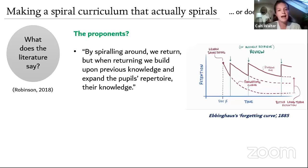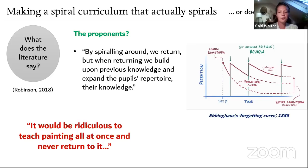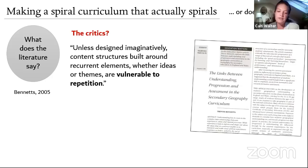Robinson said that by spiraling around, we return — and when returning, we build upon previous knowledge and expand the pupil's repertoire. Looking at the forgetting curve, the more they revisit an idea, the less likely they are to forget it. I like the concept that it would be ridiculous to teach painting all at once and never return to it.